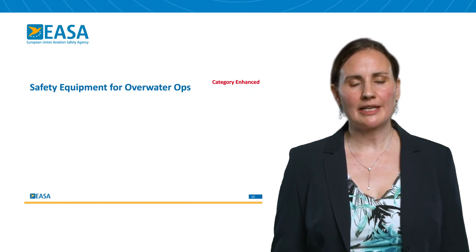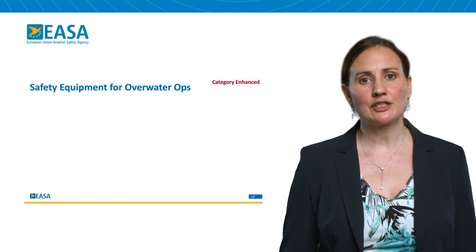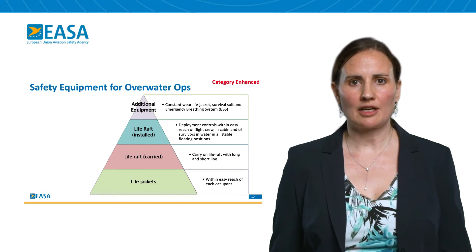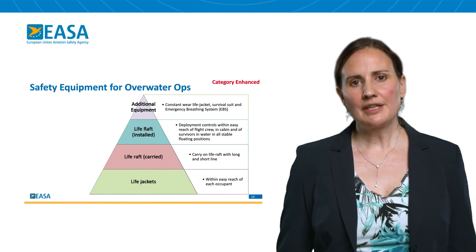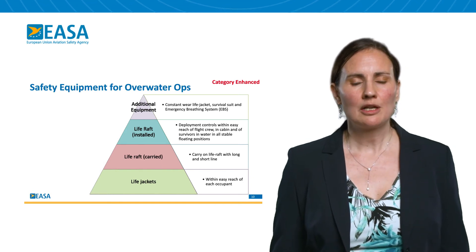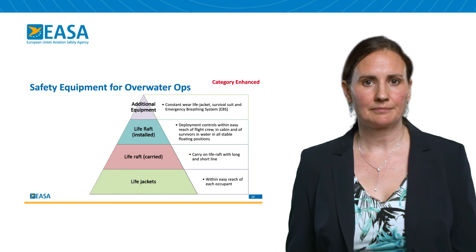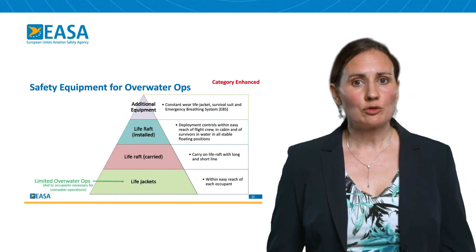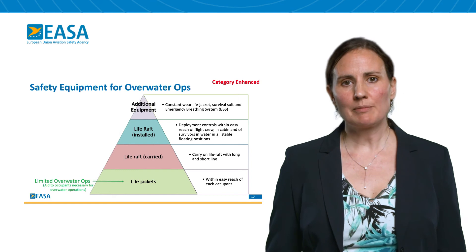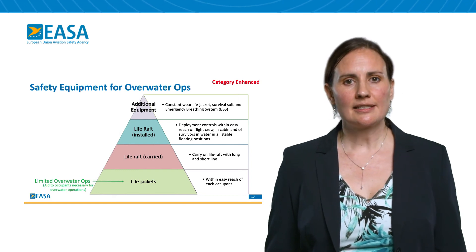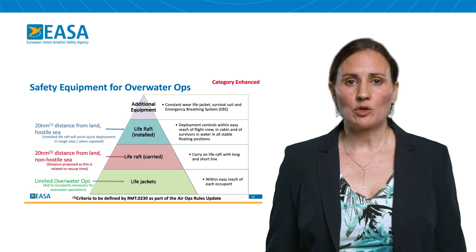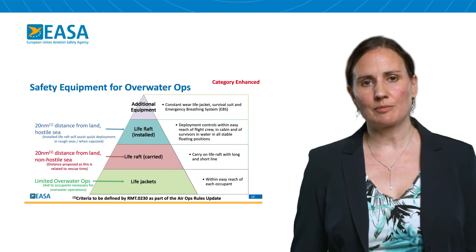Safety equipment plays a key role in enhancing occupant survivability in the event of an overwater emergency. Safety equipment includes life jackets, life rafts, and other additional specialised equipment. If the air operations regulation mandates safety equipment, the means of compliance for VTOL will define the appropriate design criteria. For all overwater operations across all three categories, including limited overwater operations, a life jacket is necessary that must be in easy reach of the occupants.